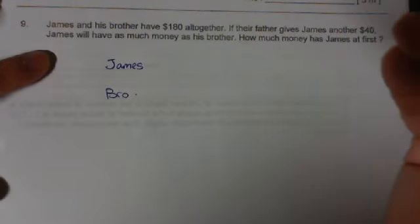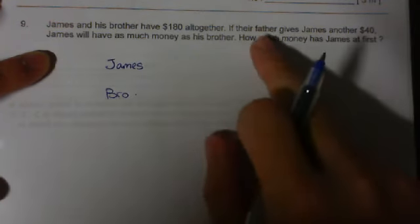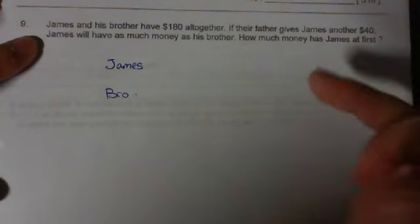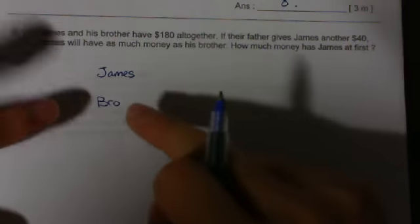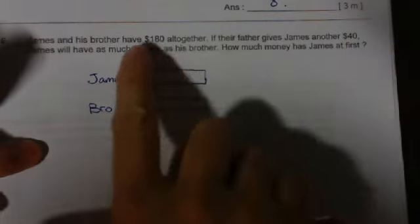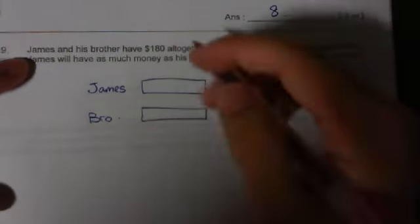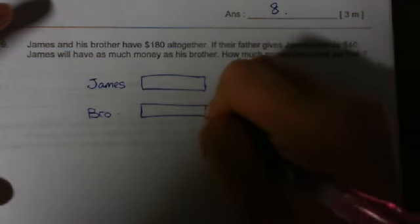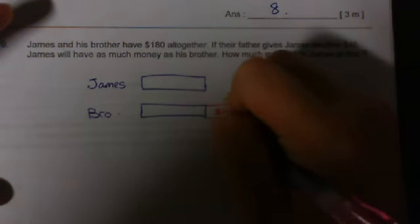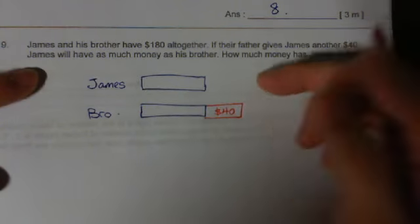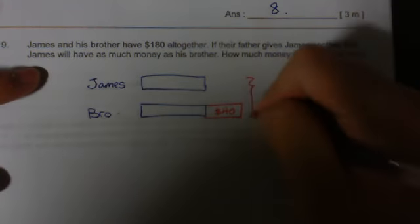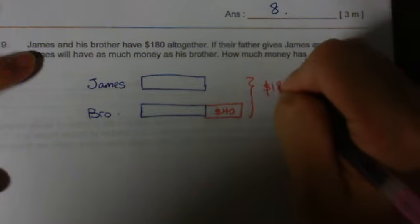James and his brother have $180 all together. Now, if their father gave James $40, James will have as much as the brother. So, obviously the brother has more. But how much more? From what we can read here, we know that the brother actually have $40 more than James. Because if James received $40, it's the same. So, this amount equals $180.